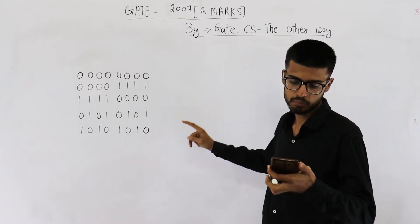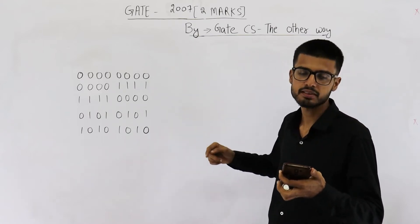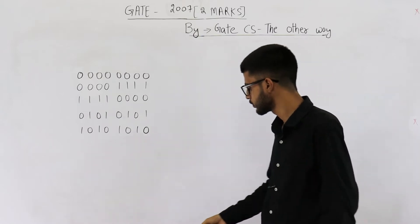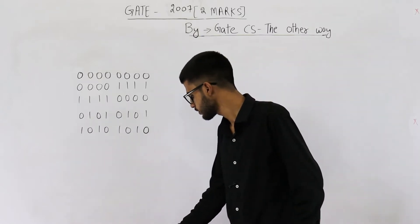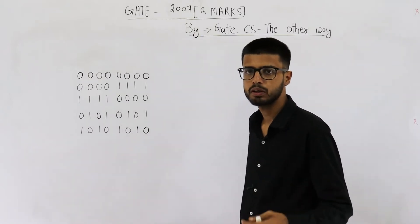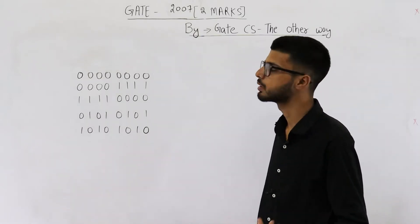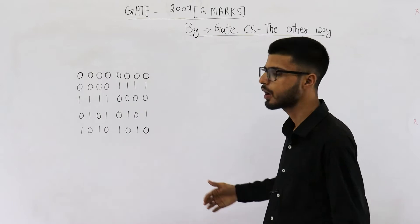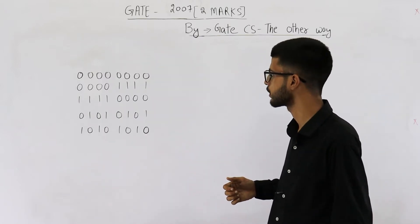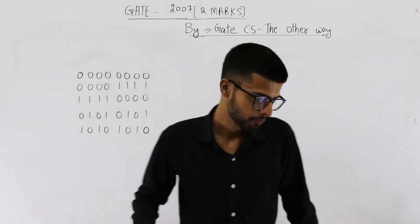What is the maximum number of bit errors that can be corrected? So the question is: can we correct 1 bit, 2 bit, 3 bit, or 4 bit? How many maximum errors can be corrected?